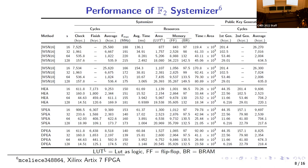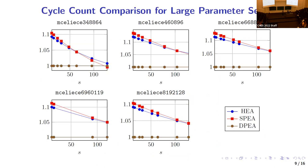They give a detailed comparison of their work versus previous work for McEliece 3488-64 using an Artix-7 FPGA, and provide a cycle count comparison for all three systemizers across larger parameter sets.